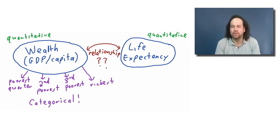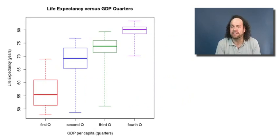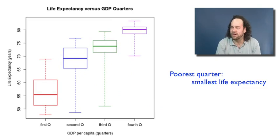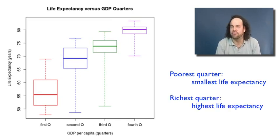We already know how to examine the relationship of that categorical variable with a quantitative variable like life expectancy — namely, we can do side-by-side box plots. Here we see box plots for the life expectancy of the poorest quarter of countries, the second poorest, the third poorest, and the richest. Looking at it, it does seem pretty clear that the poorest quarter of the countries, for the most part, have the smallest life expectancy, and the richest quarter, for the most part, have the highest life expectancy. So that suggests there's a relationship.